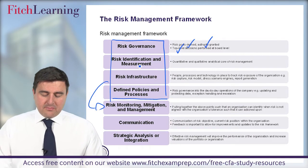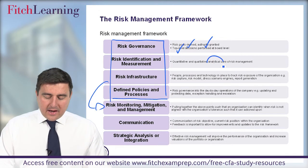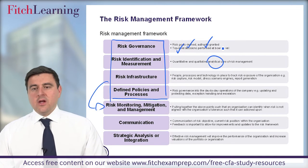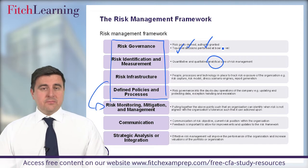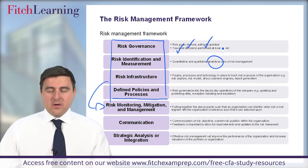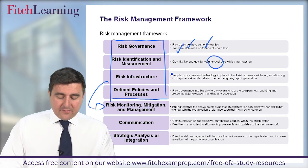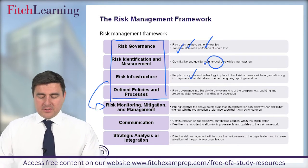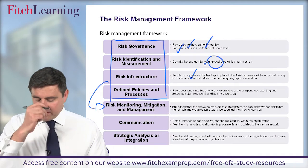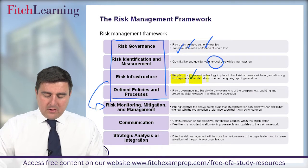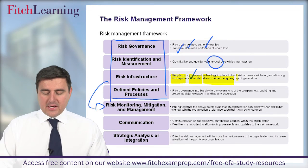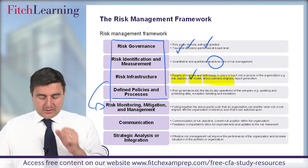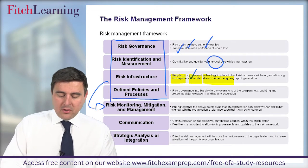Risk identification and measurement represents the quantitative and qualitative analytical core of risk management, trying to measure risk in different aspects. We'll see measures such as probability, standard deviation, and beta, linking to concepts from the Level 1 syllabus. Risk infrastructure is centred around the people, processes, and technology in place to track exposure to risk within the organisation — capturing, modelling, and engaging in stress testing to identify the risks the enterprise is currently taking on.